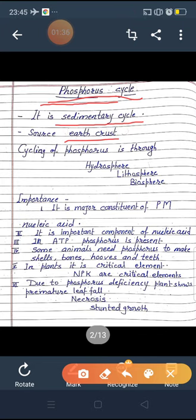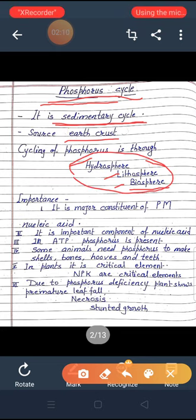So the elements are recycling. Now we study phosphorus cycle. As we discussed, phosphorus is present in earth crust in the form of rocks, so it is called sedimentary cycle. Phosphorus cycles in the form of water which is called hydrosphere, in rocks called lithosphere, and in living beings that's called biosphere. So three spheres of earth are involved in this cycle.